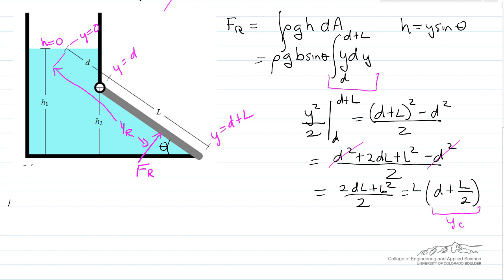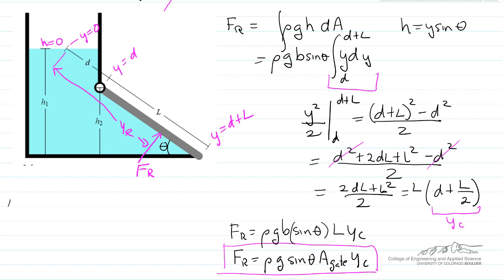So I can now write out my complete equation, and b times l is the area of the gate. And so here's the force, the first thing that we want to calculate.